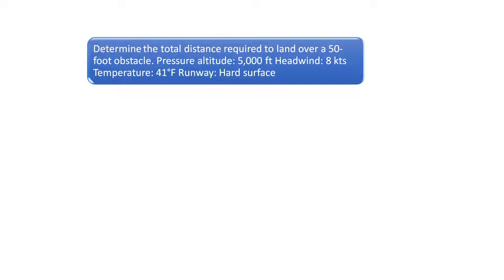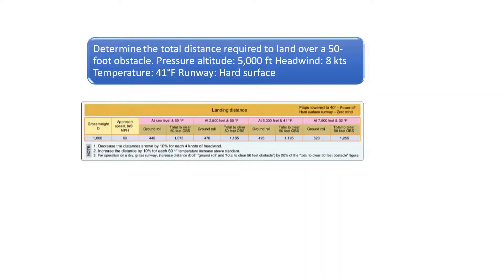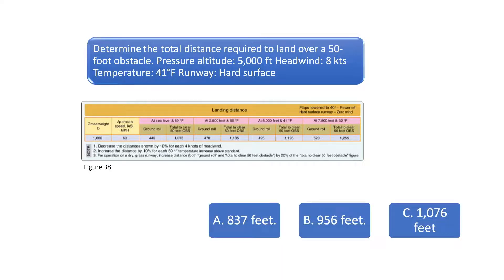Determine the total distance required to land over a 50-foot obstacle. As indicated, the pressure altitude is 5,000 feet, the headwind is 8 knots, and the outside air temperature is 41 degrees. See the section in the chart that matches the altitude of 5,000 feet and air temperature of 41 degrees. Since the current temperature of 41 degrees equals the standard temperature, no adjustments need to be made for the air temperature.